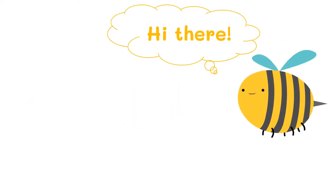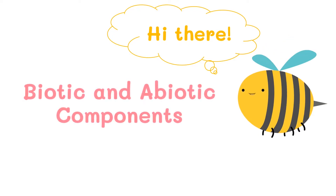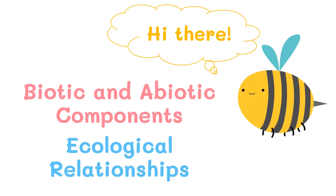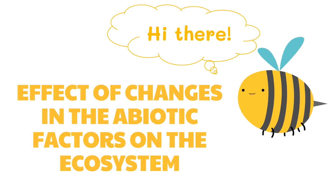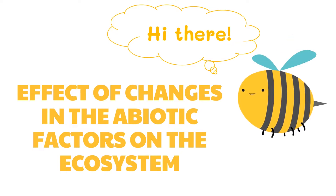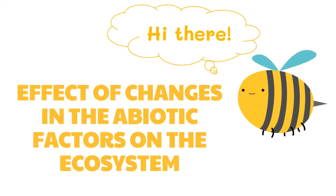Hi there! In our previous lesson, we talked about the biotic and abiotic components in an ecosystem as well as the different ecological relationships. In this lesson, we will be discussing the effect of changes in the abiotic factors on the ecosystem. If you haven't watched the previous lesson, you can pause this video and watch that one first to better understand our lesson today.